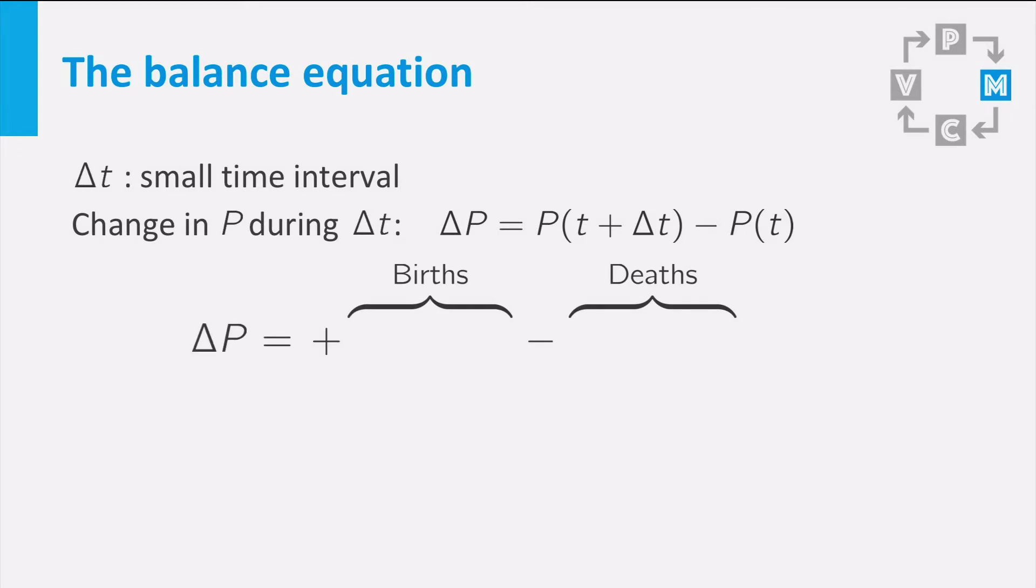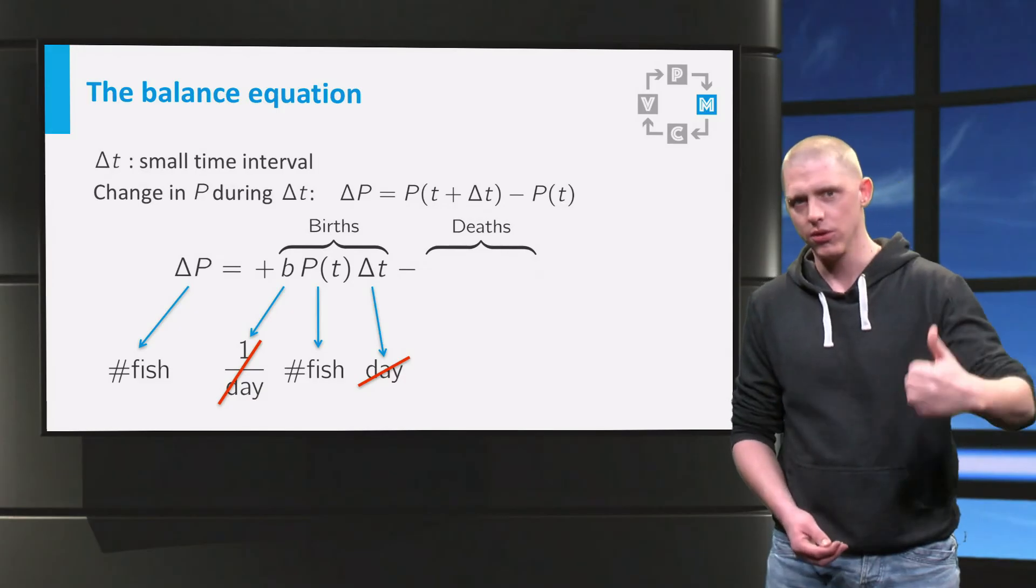The population size changes only because of births and deaths. If we have P rainbow fish, in one day b times P new rainbow fish are born. So if you wait delta t days, in total b times P times delta t new rainbow fish are born. Let's check the units. The unit of delta P is number of fish. The unit of b is per day. P is the number of fish. Delta t is in days. If you multiply the units of b, P and delta t, you get the unit number of fish. This is the same unit as the unit of delta P. So the units in the equation are ok.